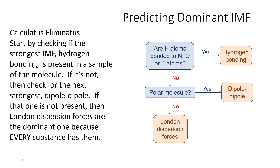The way we check for hydrogen bonding is with this first question: are there hydrogen atoms attached to a nitrogen, oxygen, or fluorine in the molecule? If the answer is yes, then hydrogen bonding is our dominant intermolecular force. If no, the next thing we check is dipole-dipole — is this a polar molecule? If it is, the strongest intermolecular force is dipole-dipole. If neither force is present, by default we're left with London dispersion forces, because any molecule that has electrons has London dispersion forces.